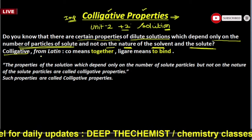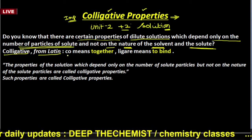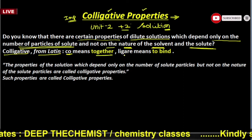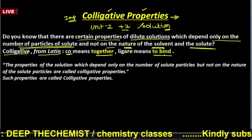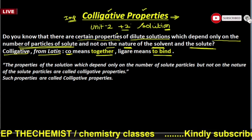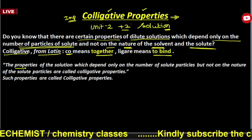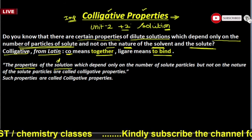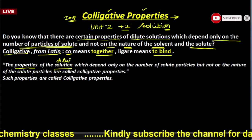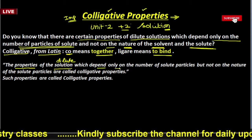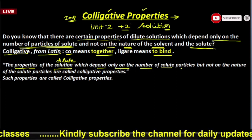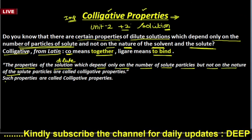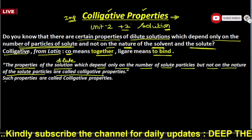The word 'colligative' has been taken from Latin. 'Co' means 'to gather' and 'ligere' means 'to bind.' So the definition of Colligative Properties is: the properties of a dilute solution which depend only on the number of solute particles but not on the nature of the solute particles are called Colligative Properties.